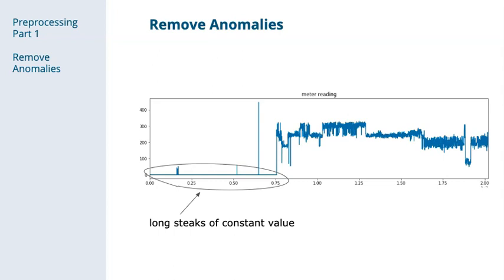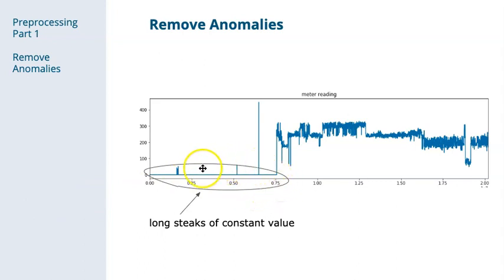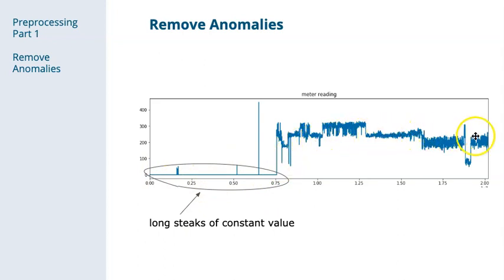This figure shows what we mean by long streaks of constant values. Here, this is clearly due to some sort of outage, and doesn't fit into the normal usage pattern, and so it should be removed.